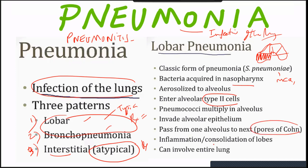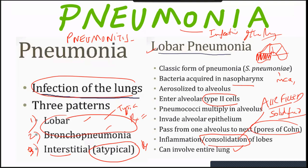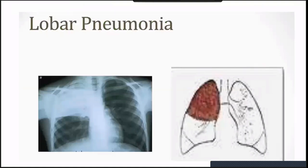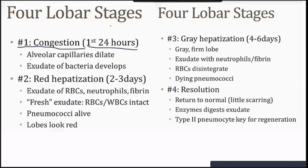There are four stages of lobar pneumonia, important for all exams including SMLE, USMLE, PLAB, and Taibah University. Stage 1 is congestion: the alveolar capillaries become dilated and exudate of bacteria develops in the alveolar area. Stage 2 is red hepatization: the lung becomes red, resembling liver — occurring at two to three days, with exudate of RBCs, neutrophils, and fibrin, and the pneumococci are still alive. The lobes look reddish.